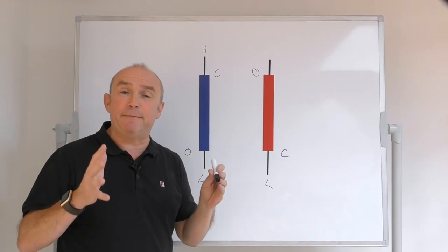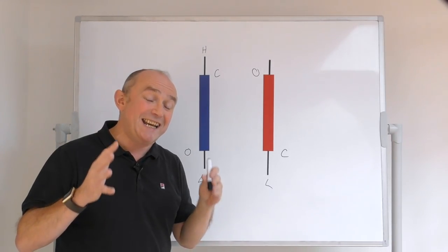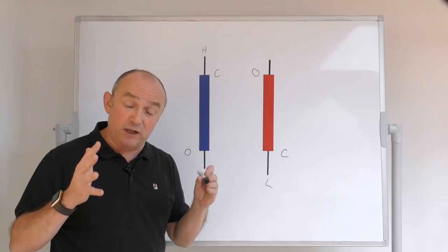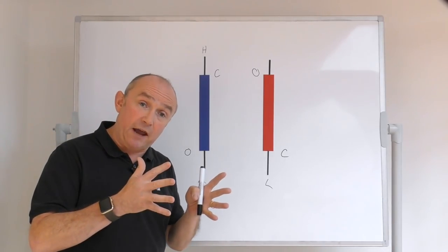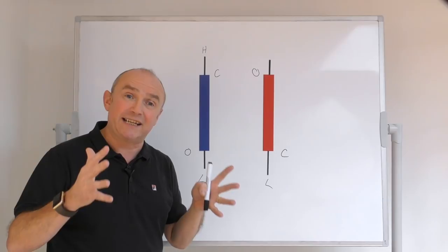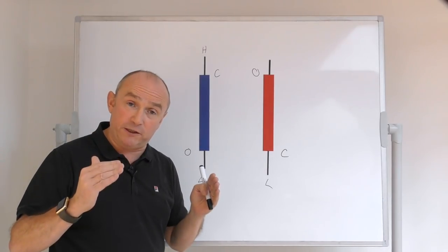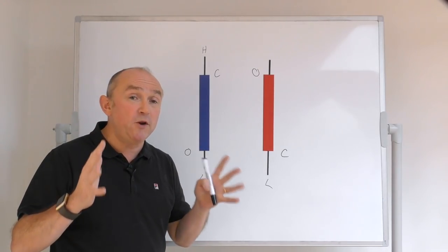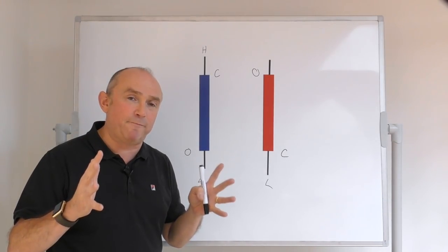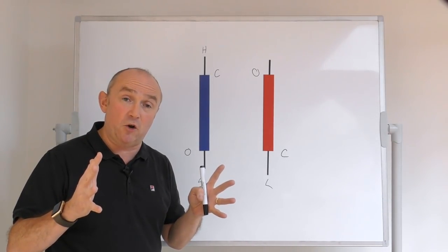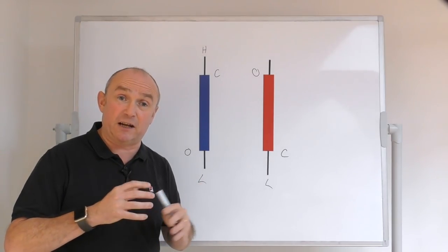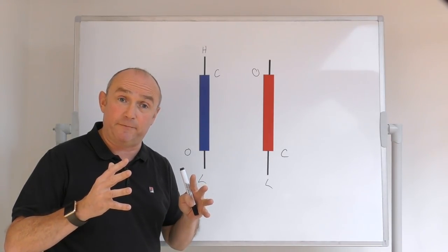Looking at a particular candle on its own isn't the best way to do it. You need to be looking at candles in conjunction with other candles surrounding it, and also at key levels of support and resistance. When you match these together, it can give you a very good indication of where price may go in the future, and it can also give you good entry and exit levels.